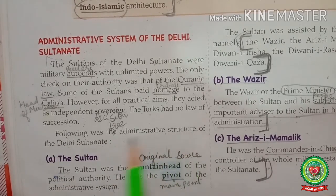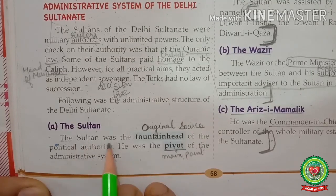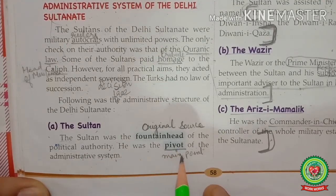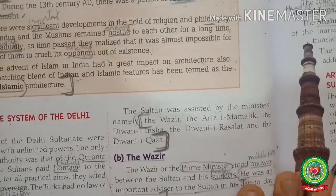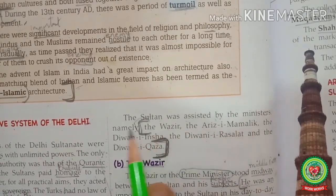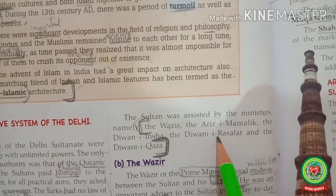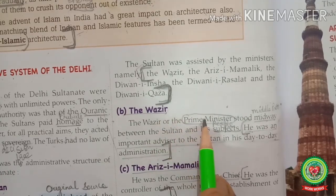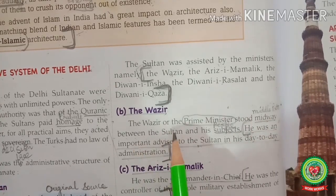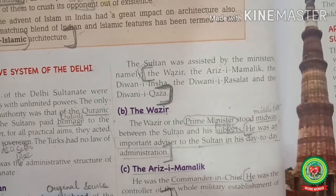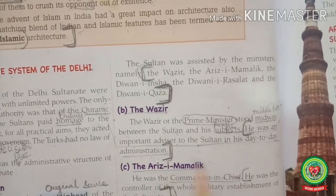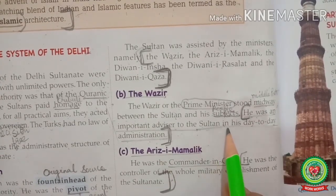The Sultan was the fountainhead — meaning original source — of political authority. He was the pivot, meaning the main central point, of the administrative system. He was assisted by a number of ministers: the Wazir, the Arize Mamlik, the Divane Insha, Divane Rasalat, and Divane Kaza. The Wazir, or prime minister, stood midway between the Sultan and his subjects — subject means people. He was an important advisor to the Sultan in his day-to-day administration.